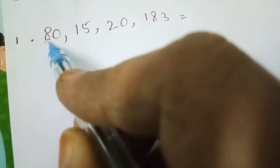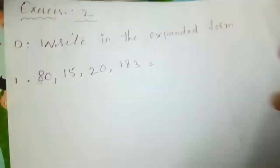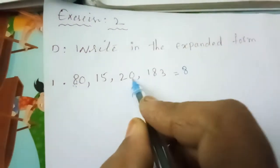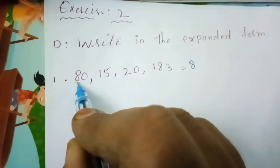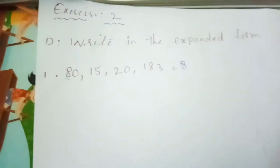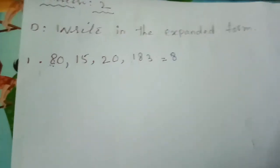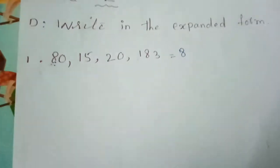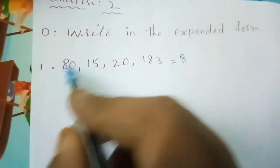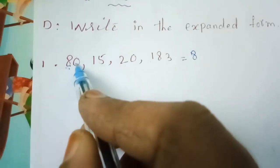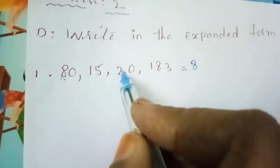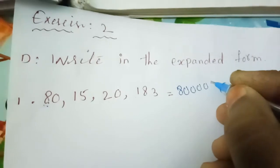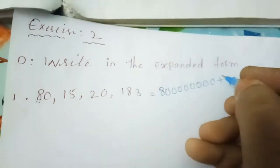The first digit on the left is 8. What is its place value? Going through: ones, hundreds, thousands, ten thousands, lakhs, ten lakhs, crores, ten crores — so 8 is in the ten crores place. Ten crores has eight zeros. Count after the 8: one, two, three, four, five, six, seven, eight. So write 8 followed by eight zeros, then a plus mark.